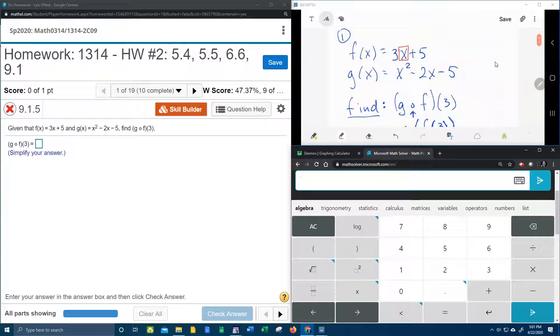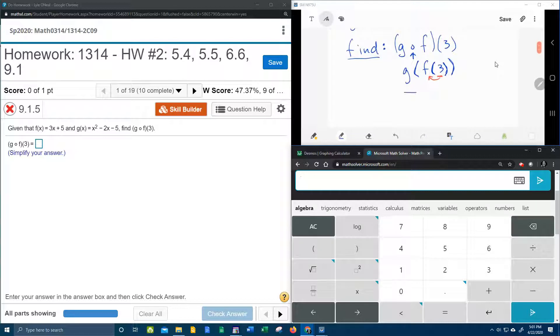So that will be 3 times 3 plus 5. So then we're going to have g of 3 times 3 plus 5. And then we just need to work that out. And so that's going to be 9 plus 5 is 14.